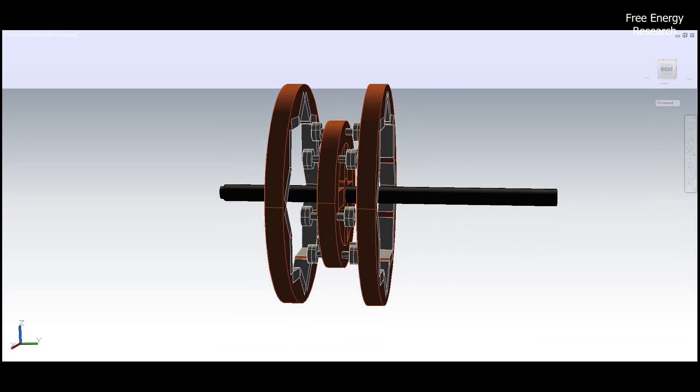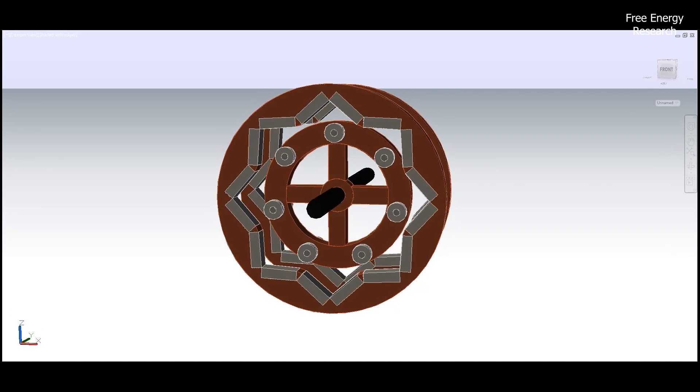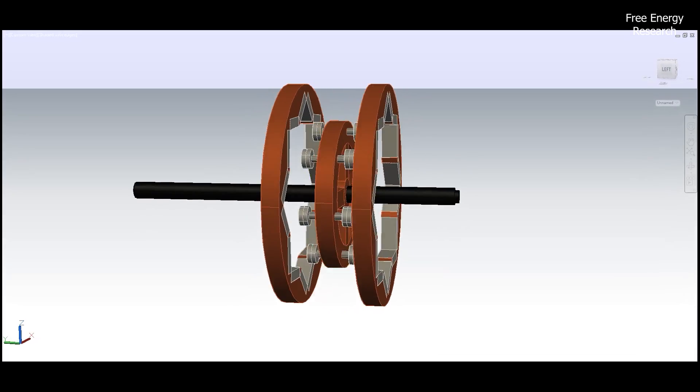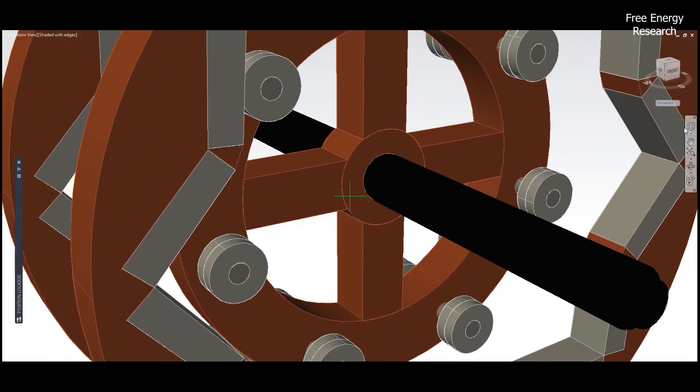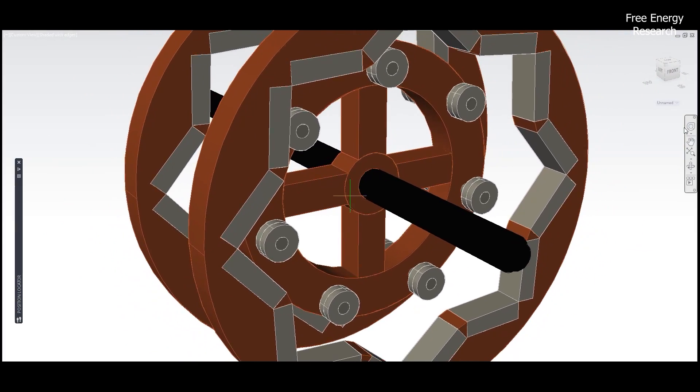The magnets in the first member face those in the second member with the same polarity, enhancing the attractive and repulsive forces. The arrangement ensures an efficient transfer of rotational kinetic energy.